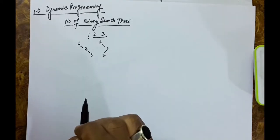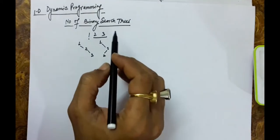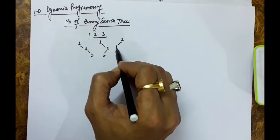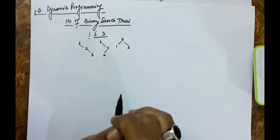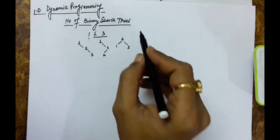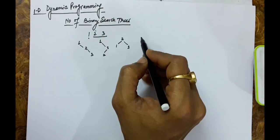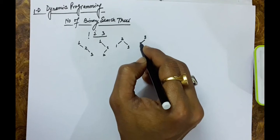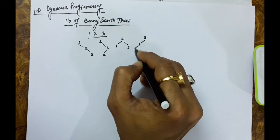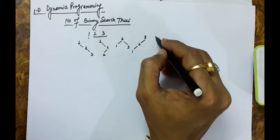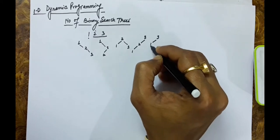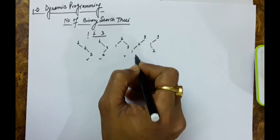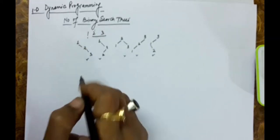If we take 2 as a root, we put 1 on the left and 3 on the right — only one tree is possible. If we take 3 as a root, then 1 and 2 go on the left hand side: 2 can be the left child with 1 as its left child, or 1 is the left child with 2 as its right child — giving two more trees.